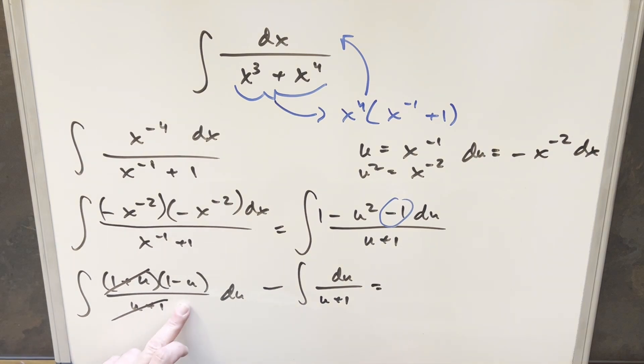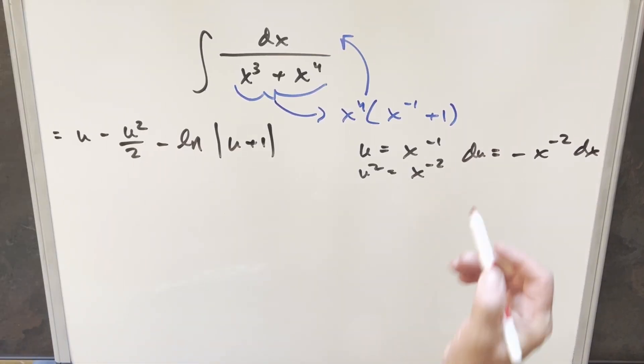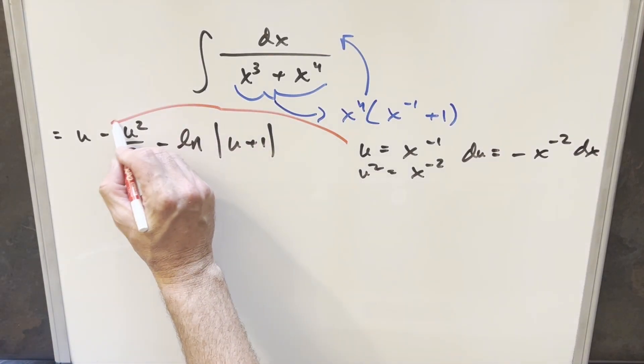So we'll go ahead and integrate this first. Integral of 1 is going to be u, integral here minus u squared over 2. And then for this, it's just going to be minus natural log of u plus 1. And from here, all we need to do is just back substitute in order to finish this thing off.